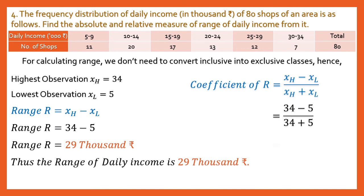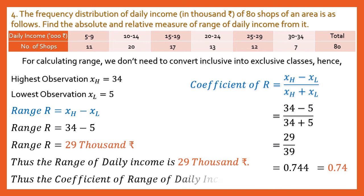Coefficient of range = (34 − 5) / (34 + 5) = 29 / 39 ≈ 0.744, rounding to 0.74. Statement: The coefficient of range of daily income is 0.74. To summarize: whether it's ungrouped data, discrete data, or inclusive/exclusive classes, you always take highest minus lowest for range, and (highest − lowest) / (highest + lowest) for the coefficient of range.